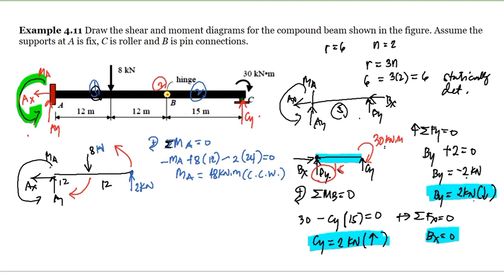If we summate forces vertical equals zero, we have AY minus 8 plus 2 equals zero, since these are the only vertical forces: AY, the 8, and the 2. Therefore AY equals 6 kilonewton upward.